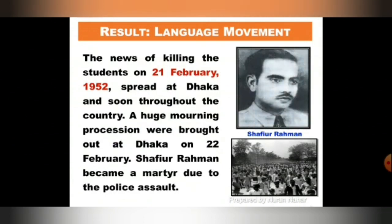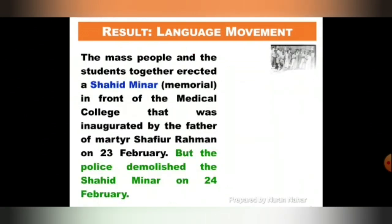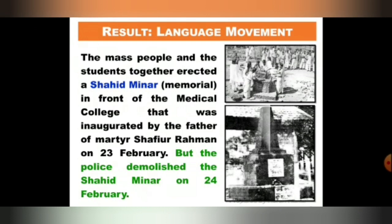The news of the killing of students on 21st February spread throughout Dhaka and soon the whole country. Huge mourning processions were brought out in Dhaka on 22nd February, which you can see in the photograph. Shafiqur Rahman became a martyr due to police assault. The mass people and students together erected a Shahid Minar, or memorial, in front of the medical college, which was inaugurated by the father of martyr Shafiq on 23rd February. But police demolished the Shahid Minar on 24th February.